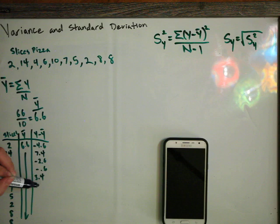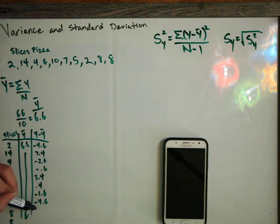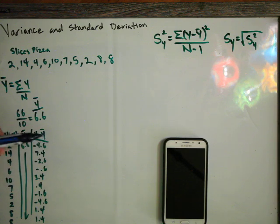7 minus 6.6 is 0.4, 5 minus 6.6 is negative 1.6, 2 minus 6.6 is negative 4.6, and 8 minus 6.6 is 1.4. So that's our y minus y bar column.